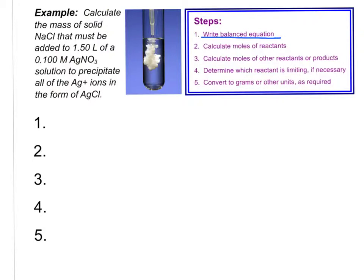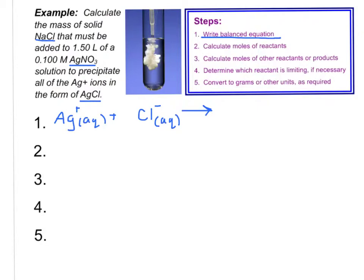We have sodium chloride and silver nitrate, and when they are mixed in solution, they're going to form silver chloride, which will be our precipitate. I'm going to write just the ions involved in this reaction. We have the silver plus one ion and the chloride ion dissolved in solution, because we know that when sodium chloride dissolves, it yields the sodium plus one and chloride minus one ions. The silver chloride that forms is a precipitate, so it's going to be a solid. This equation is balanced.